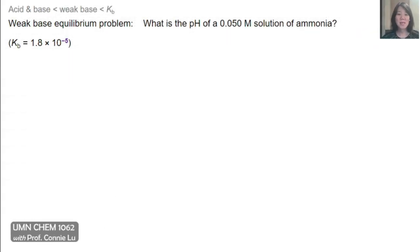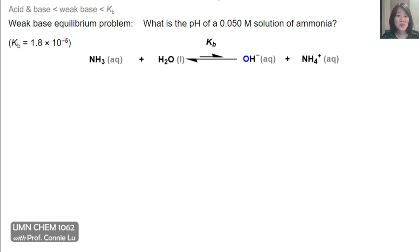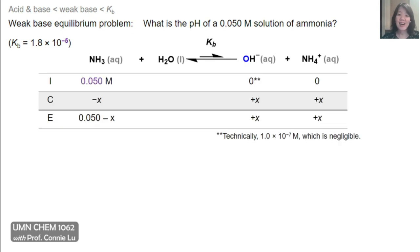And that means you form very little products, so the concentration of hydroxide should be very small. This is an example of a weak base equilibrium problem where we're asked to solve for the pH of a 0.050 molar solution of ammonia. We're given the Kb value for this weak base. So the first step in solving this problem is to write down the Kb reaction — ammonia plus water to give hydroxide and ammonium cation. Now I can write the ICE table and populate it with the initial concentration of ammonia, and here on the product side, essentially we have no products.